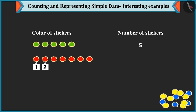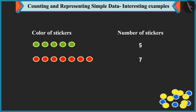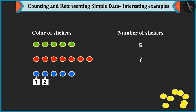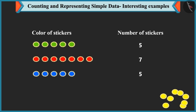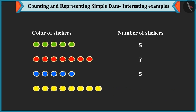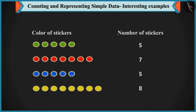Bubbly continues counting: there are 1, 2, 3, 4, 5, 6 and 7 red stickers, so we write 7 against red stickers. There are 1, 2, 3, 4 and 5 blue stickers, so we write 5 against blue stickers. And there are 1, 2, 3, 4, 5, 6, 7 and 8 yellow stickers, so we write 8 against yellow stickers.